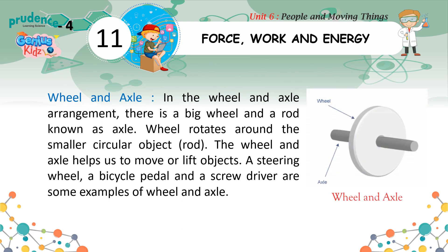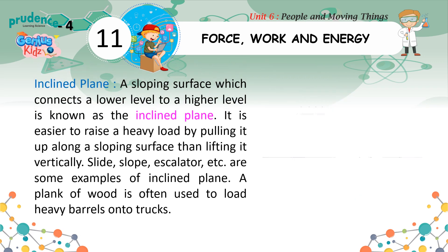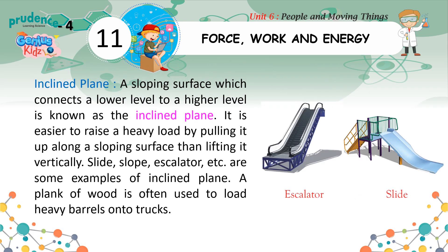Wheel and axle: In the wheel and axle arrangement, there is a big wheel and a rod known as the axle. The wheel rotates around the smaller circular object. The wheel and axle helps us to move or lift objects. A steering wheel, a bicycle pedal and a screwdriver are some examples of wheel and axle. Inclined plane: A sloping surface which connects a lower level to a higher level is known as the inclined plane. It is easier to raise a heavy load by pulling it up along a sloping surface than lifting it vertically.